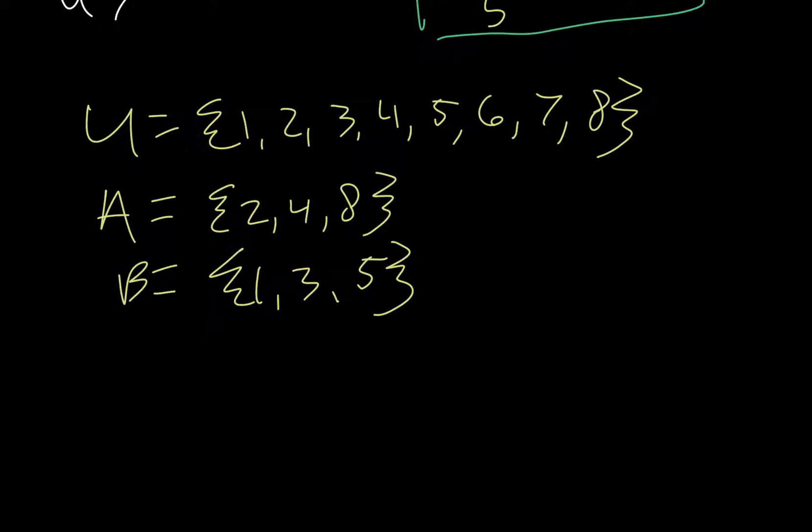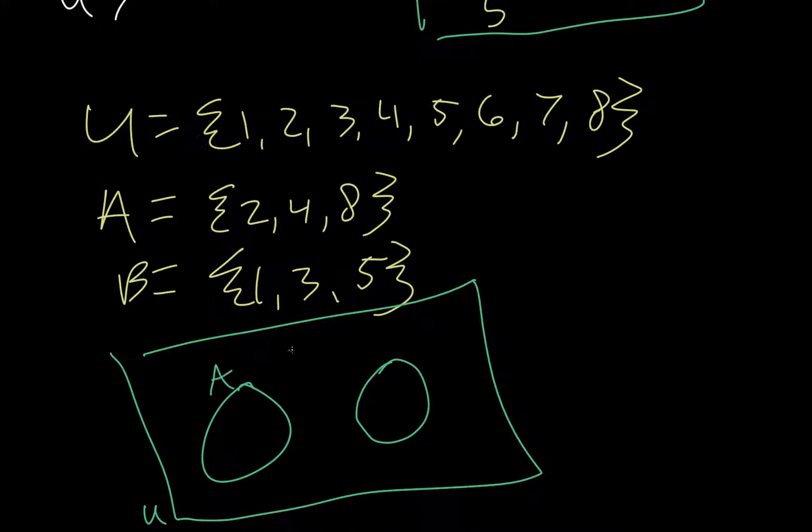So, the first thing we want to do is mark what they have in common. And you should notice that they have nothing in common. So, when we do our universal set, we have two sets that have nothing in common. So, they're disjoint or mutually exclusive. So, if I write everything that's in A, I get two, four, eight. And then, if I write everything that's in B, I get one, three, five.